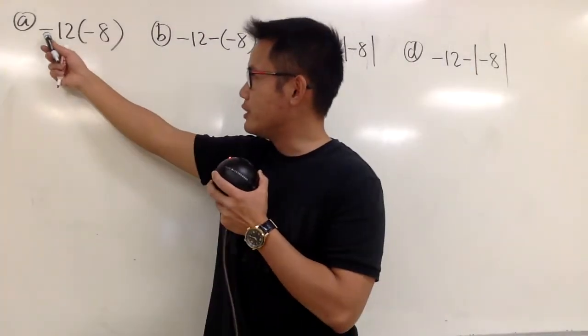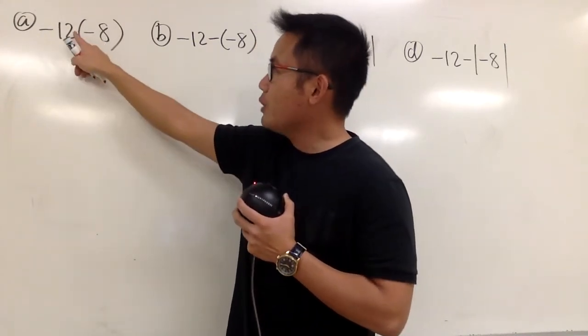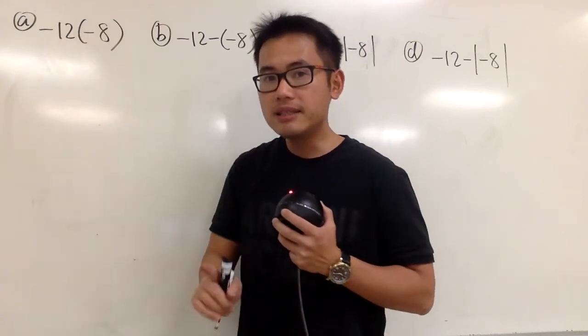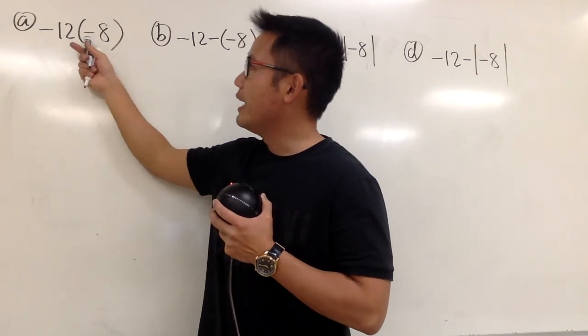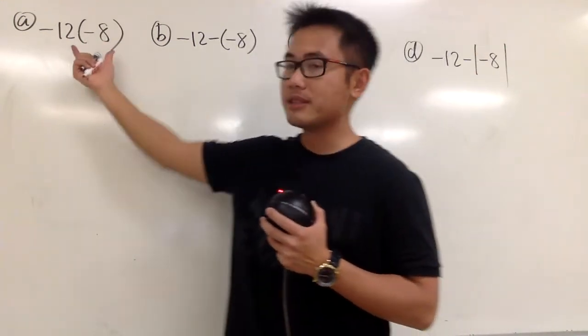When the question is written in this way, negative 12, parentheses, negative 8, we don't have any specific operation in between, right? In this case, it means that we are going to multiply negative 12 and negative 8. We are multiplying these two numbers together.